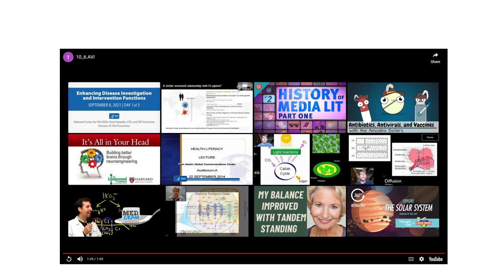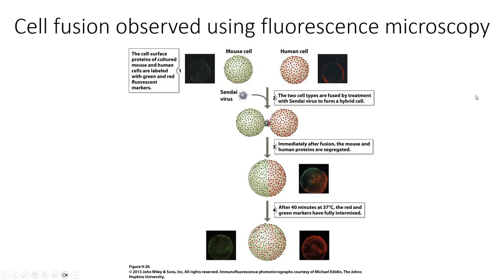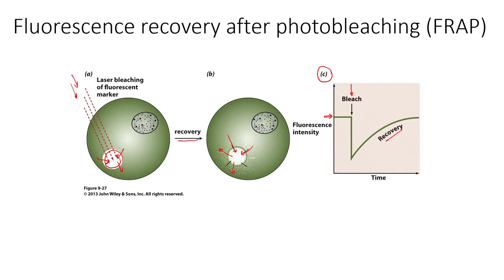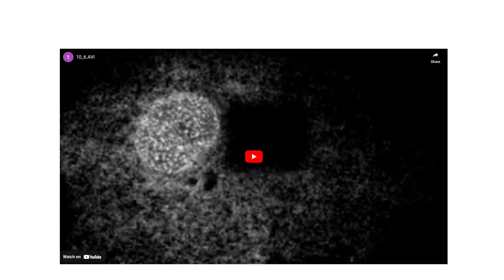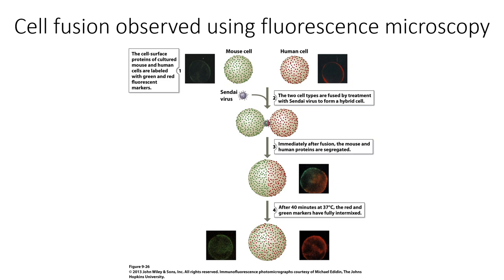That was a good example of both this bleaching and recovery that we first discussed. The second part of the video showed us in contrast what happens when you have a constrained protein that's unable to diffuse laterally. So now let's move on to thinking about some other methods we can use to observe the lateral movement of proteins in a cell membrane.